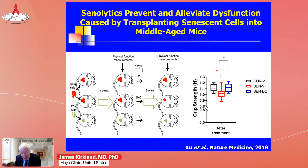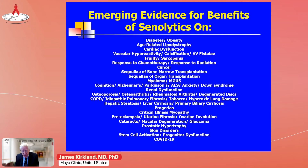Those transplanted mice I talked about before — if we treat them with senolytics after transplanting them with senescent cells, we prevent their frailty and we prevent them from dying early. Since we originally discovered senolytics, there are now about 70 conditions in preclinical models in mice, monkeys, and other animal models, and human tissue explant and cell culture models where it looks like there might be a beneficial potential effect of senolytics if used in the right way.